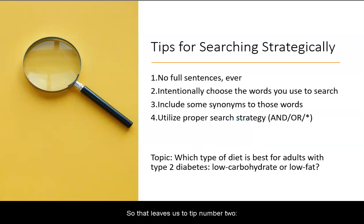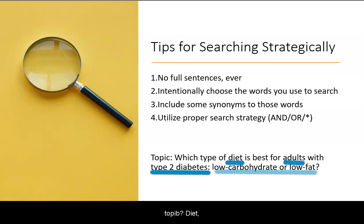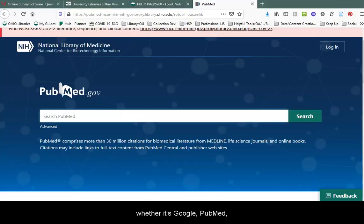So that leads us to tip number two: intentionally choose the words you use to search. What are the core components of my topic? Diet, adults, type 2 diabetes, low carbohydrate, or low fat. So when I go into a database — whether it's Google, PubMed, etc. — I am just using those keywords.